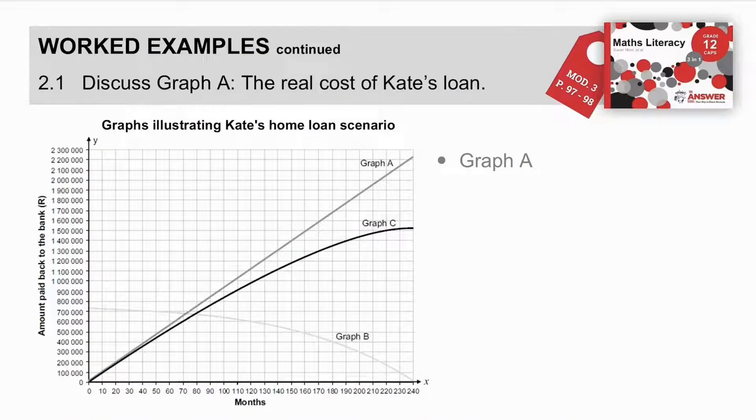Let's go through worked examples. Discuss graph A, which they tell us is the real cost of Kate's home loan. If we have a look at our graph, they've given us months. 240 months is 20 years. So, that indicates that it's a home loan, which they've told us. And, the amount paid back at the end. So, if we look at graph A, it is a straight line graph.